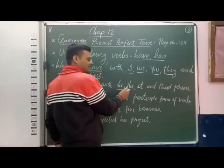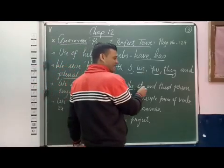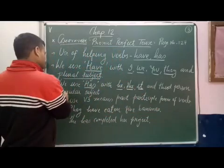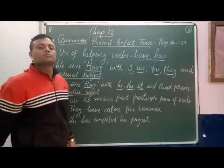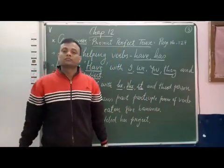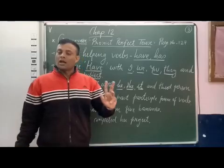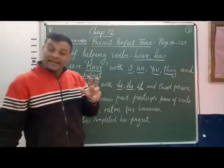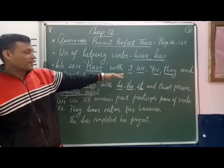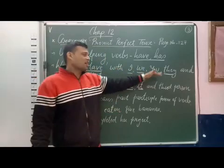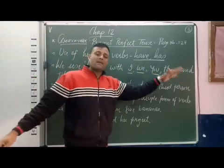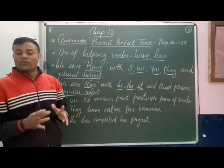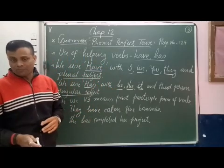Third person singular means he, she, it, or a third person singular subject. I hope you have understood the use of 'have' and 'has' in present perfect tense. 'Have' we use with I, we, you, they, and plural subject, whereas 'has' we use with third person singular.